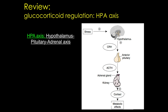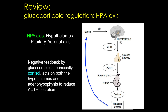Cortisol is secreted in response to stress, among other things, and also in response to adrenocorticotrophic hormone from the anterior pituitary. It acts to reduce stress, but it also provides negative feedback on the hypothalamus as well as the anterior pituitary.